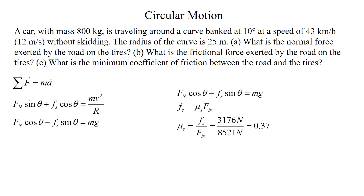For Part C, the minimum coefficient of friction is when we are just on the verge of skidding — static friction at its maximum value. Setting F_s = mu_s · F_n and solving: mu_s = F_s / F_n = 3,176 / 8,521 = 0.37, rounded to two significant digits.